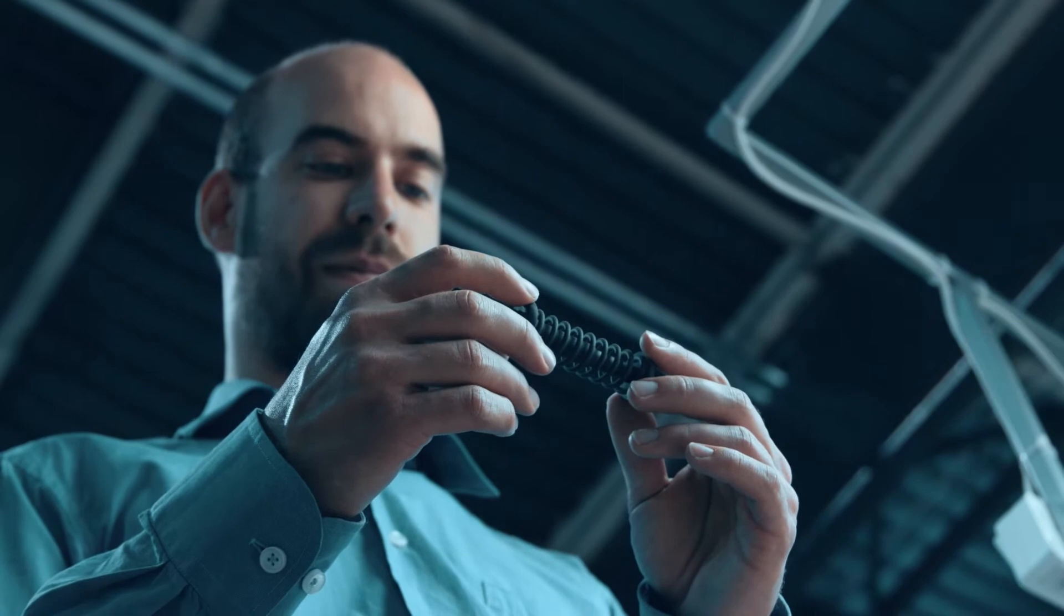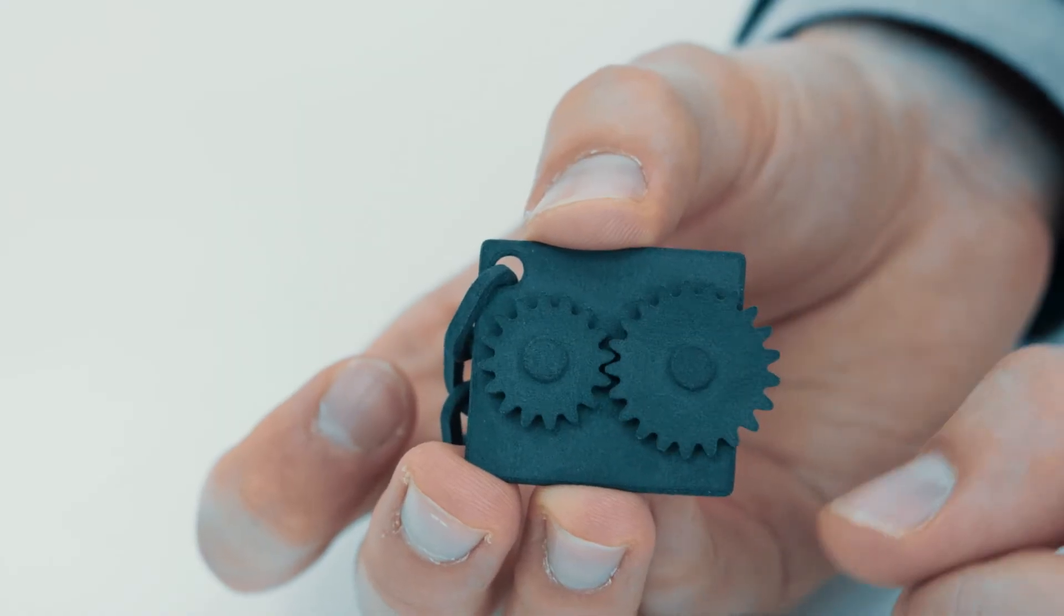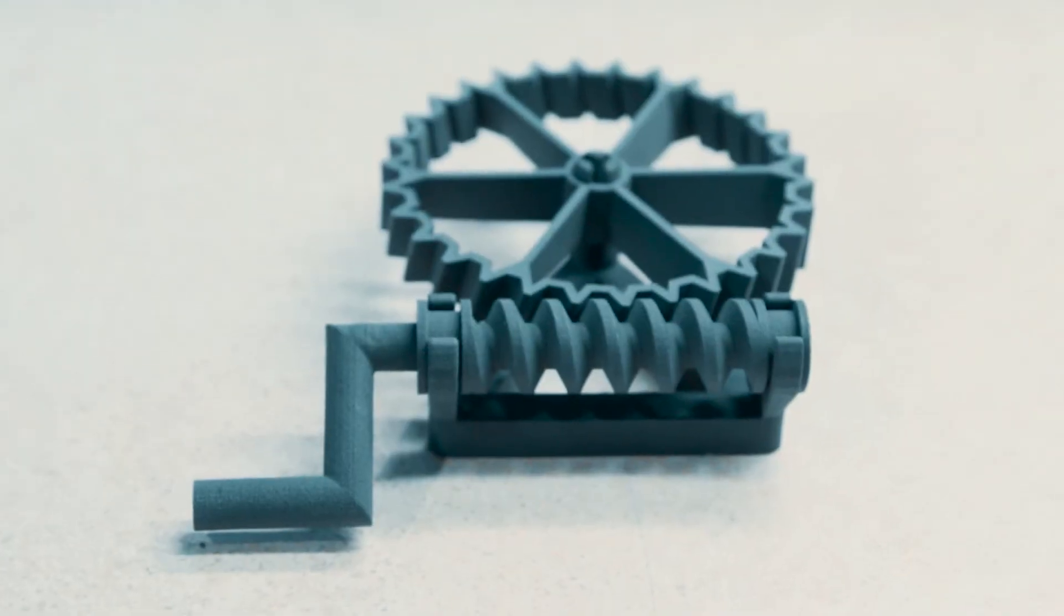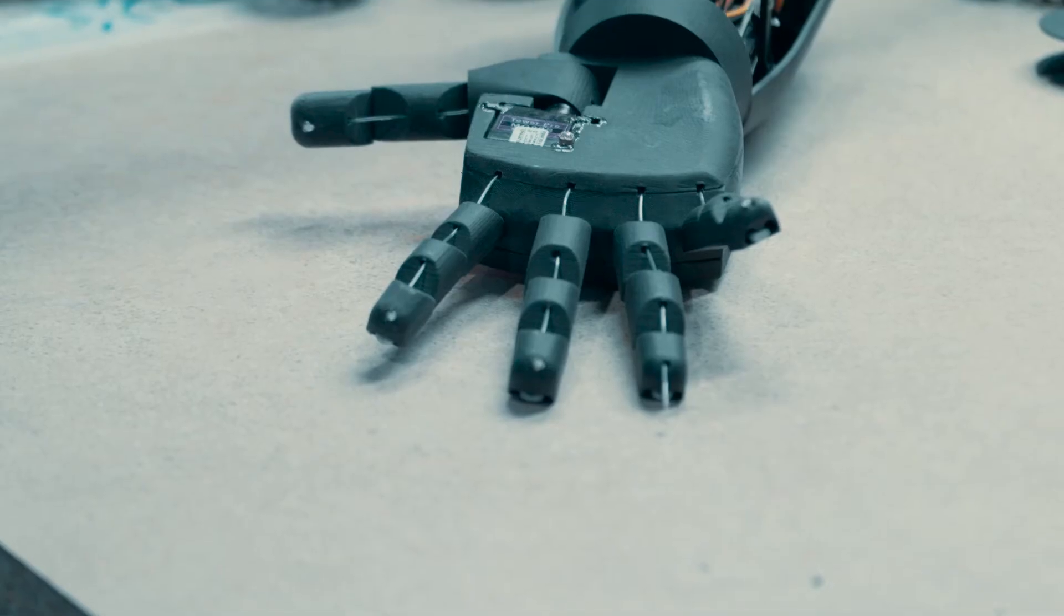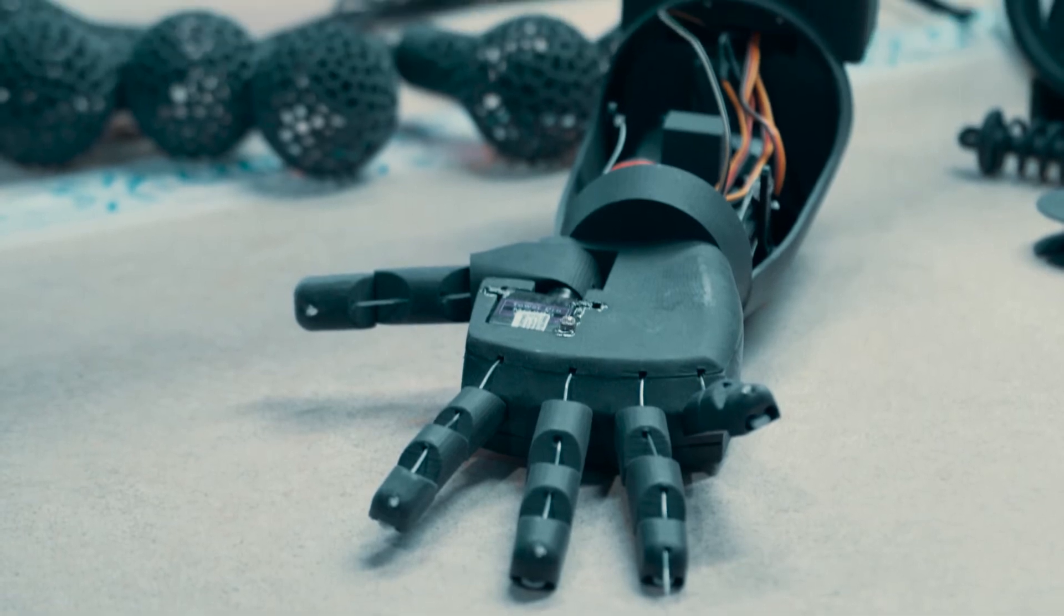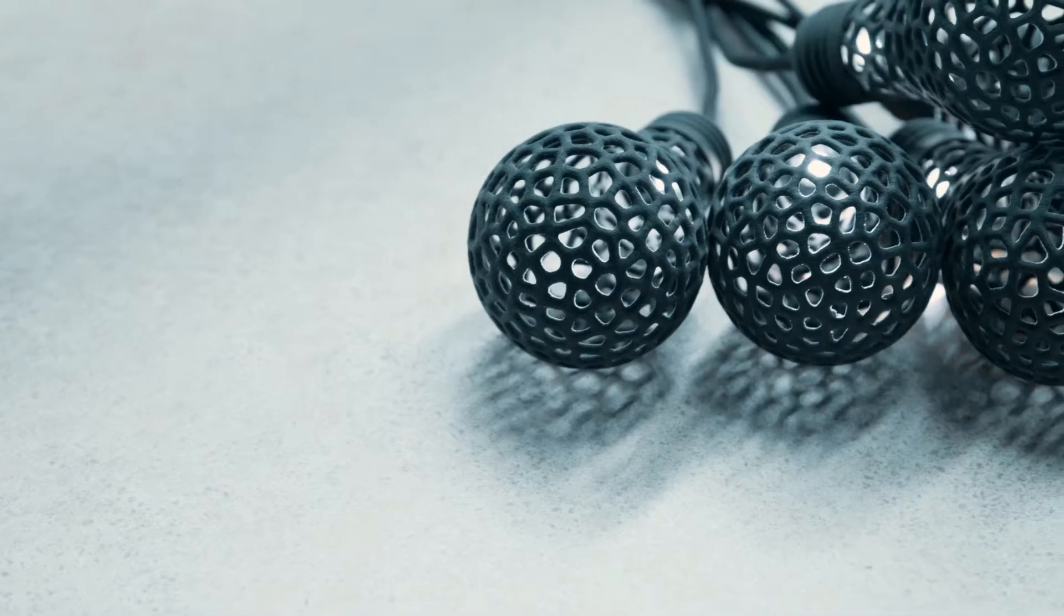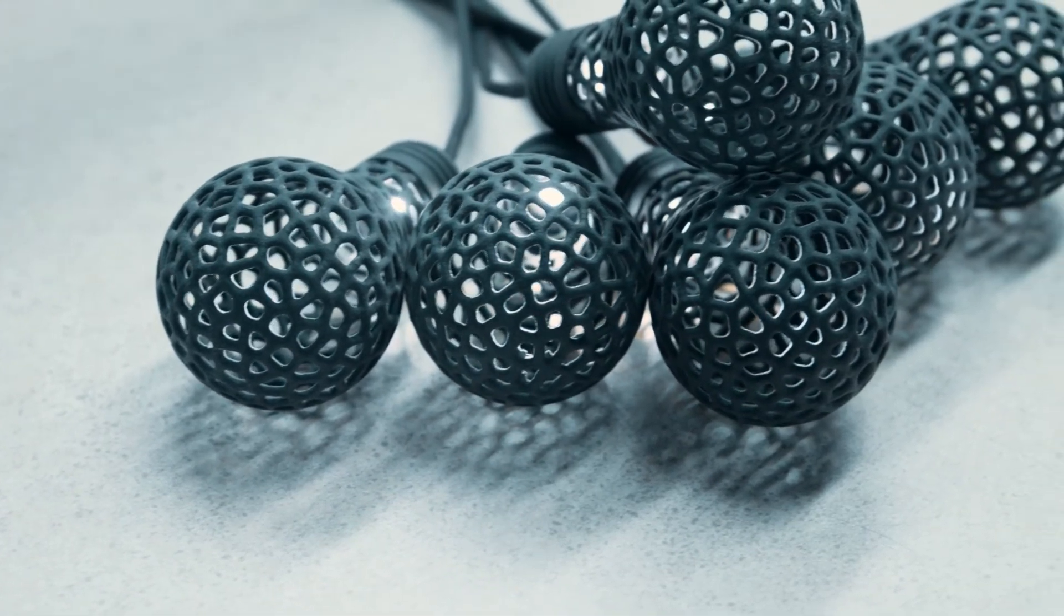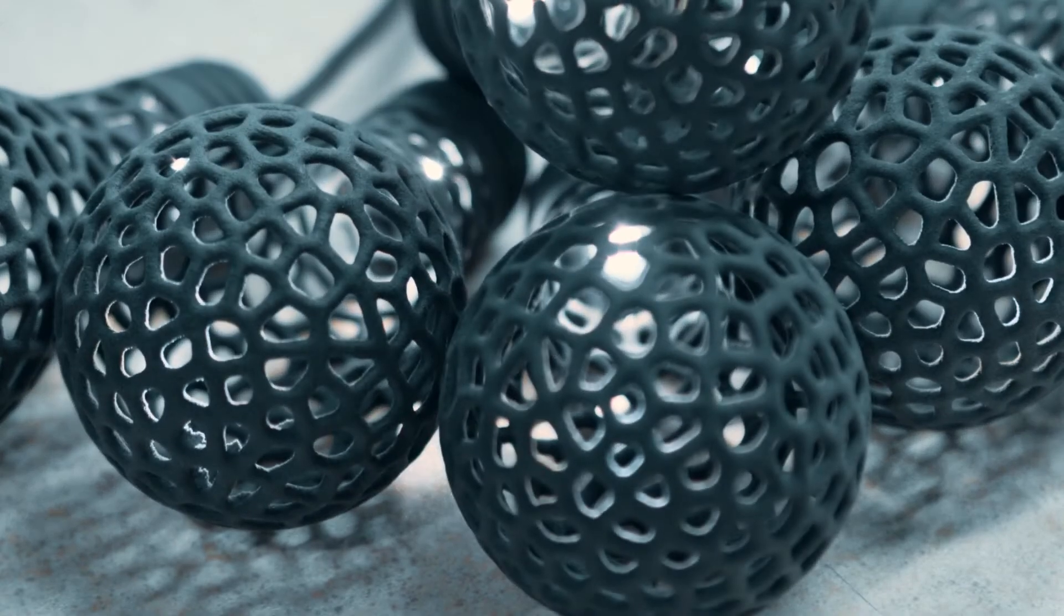Printed parts have not only very good surface quality, but they are also really strong. You can use them as functional prototypes or even spare parts in your machinery. Models printed in SLS technology are heat resistant and chemically resistant, which gives you huge opportunities.